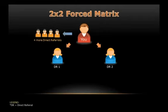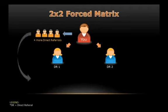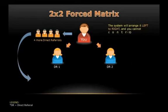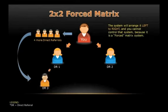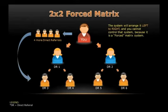What are you going to do? Are you going to give your 4 more direct referrals to your 2 downlines? The answer is a big no. Just register your 4 more direct referrals under your referral link, and it's the TNMM forced matrix system that will arrange them under your first 2 direct referrals — left to right in a forced manner. You cannot control that, since it is a forced matrix system.